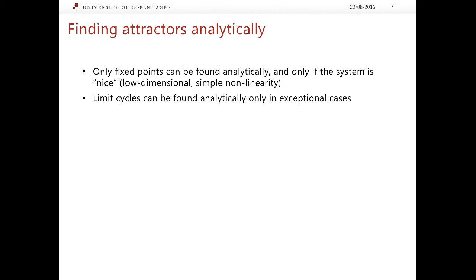What about limit cycles? Well, limit cycles can very rarely be found analytically, but most of the time they cannot be located analytically. And finally, torii and chaotic attractors cannot be found analytically at all. So, our options are a little bit limited. We can have a hope to find only fixed point attractors, so let us try to find a way to identify them.